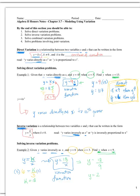What is the pattern for inverse variation? If you substitute in larger and larger values of x, y decreases. If you substitute in smaller and smaller values of x, the corresponding values of y increase. This is the pattern you will see for inverse variation.